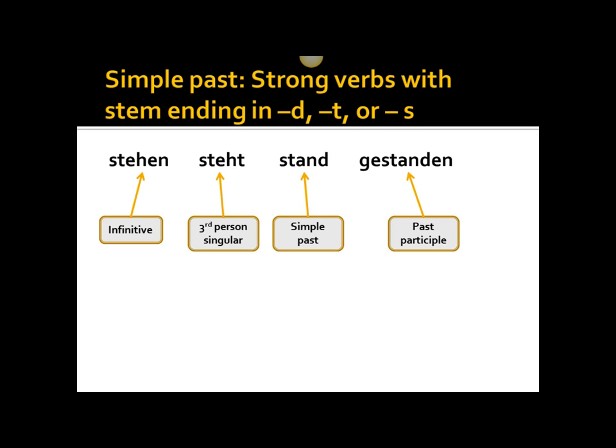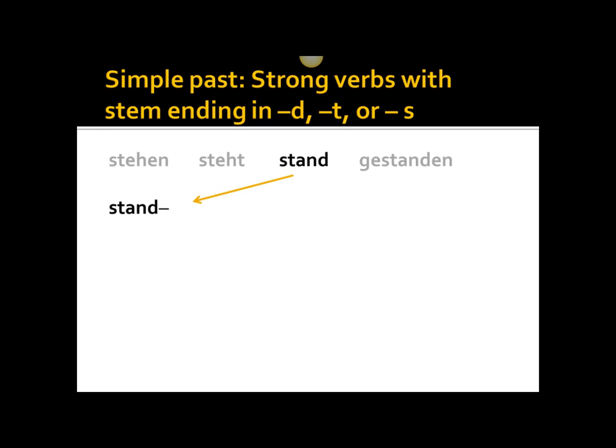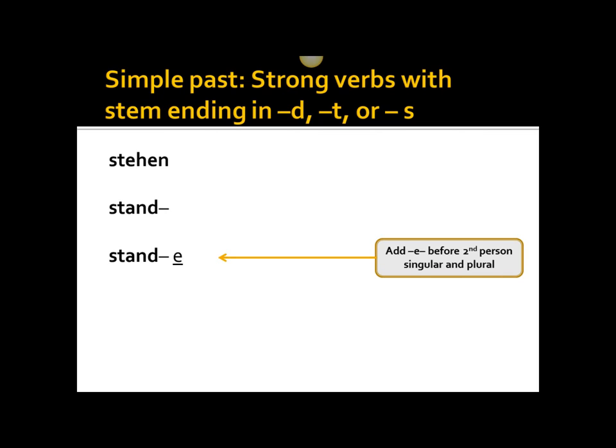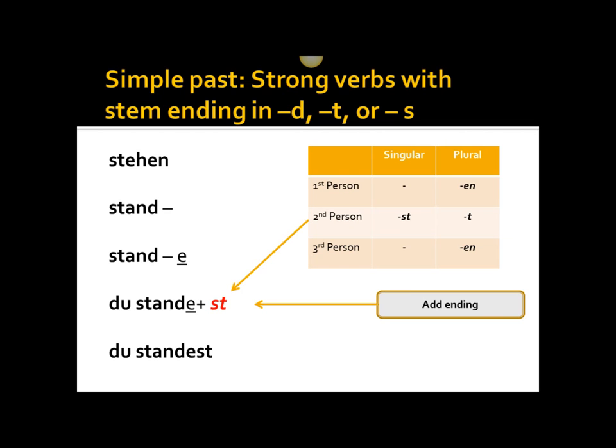Now, if we have a verb whose simple past stem ends in a D, a T, or an S — for instance, stehen, steht, stand, gestanden — the simple past stem ends in D. If we proceed with the same workflow we used with fahren, that will present some pronunciation difficulties. To solve this problem, we take the simple past stem, and if it ends in a D, a T, or an S, and we want to conjugate the second person singular or plural, we insert an E before we add the ending. So: stehen, stand — du standest.